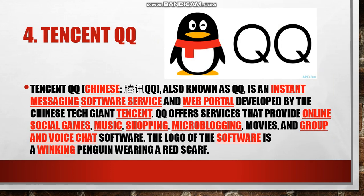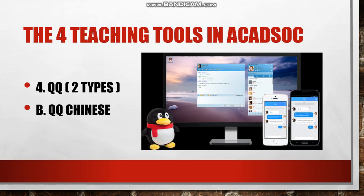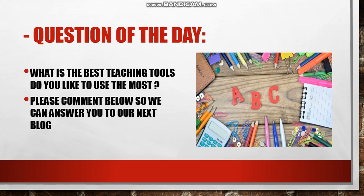The fourth teaching tool in Akatsok is Tencent QQ, also known as Quick Questions. Tencent QQ, or Chinese QQ, is an instant messaging software service and web portal developed by the Chinese tech giant Tencent. QQ offers services including online social games, music, shopping, micro blogging, movies, and group and voice chat. The logo of the software is the winking penguin wearing a red scarf. There are two types of QQ: QQ International and QQ Chinese.